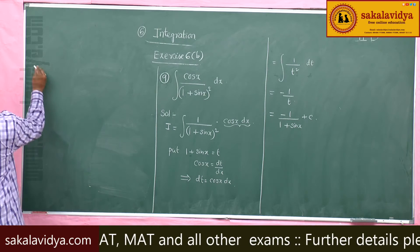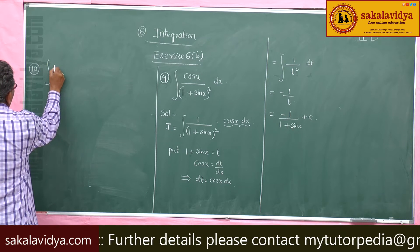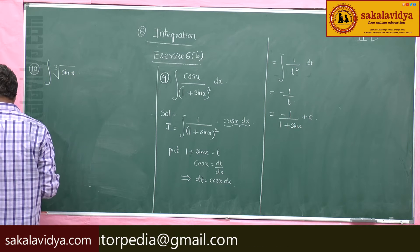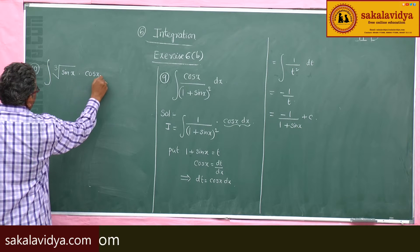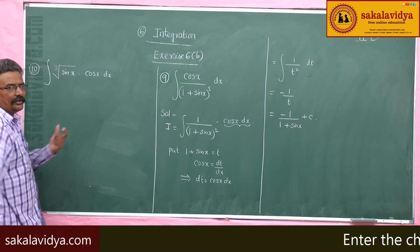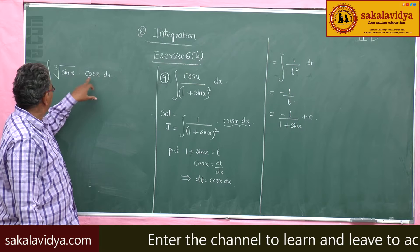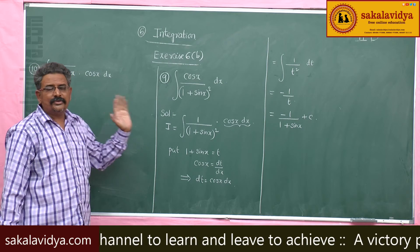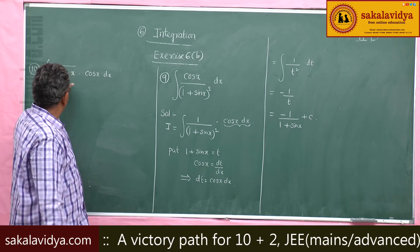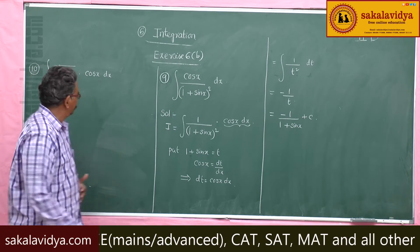Tenth problem: evaluate the integral of cube root of sin x into cos x dx. In this problem, it is very easy to find that cos x is the derivative of sin x. So, put sin x equal to t, then cos x dx becomes dt. This is integral of cube root t dt, which we can solve using the power rule.